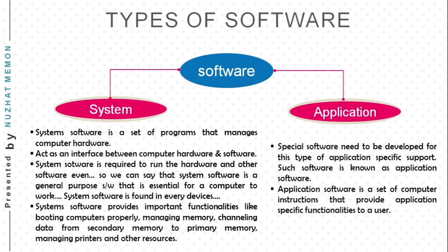There are two types of software: system and application. System software is a set of programs that manages computer hardware and acts as an interface between computer hardware and application software. To run application software, system software is also needed — it is required to run the hardware, software, and other software as well.